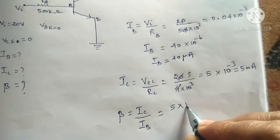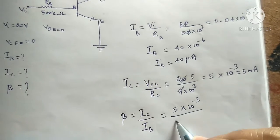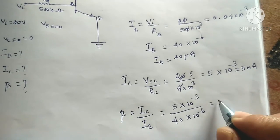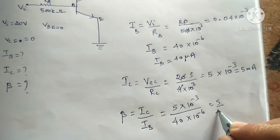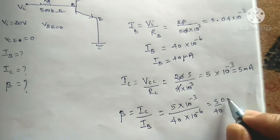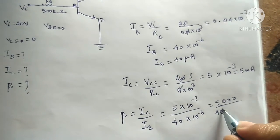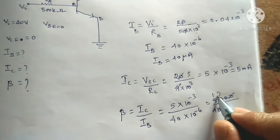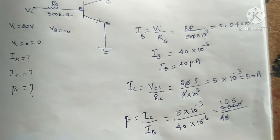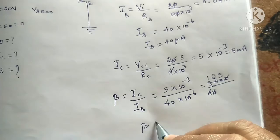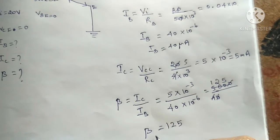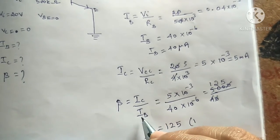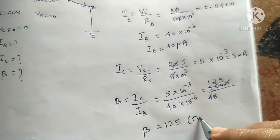10 power plus 3, 10 power minus 3, 10 power minus 6. 10 power plus 3, 10 power plus 3, 0 0 cancel cancel. 125 beta value. Gain, gain unit, ratio of same quantities IC by IB. It has no unit.